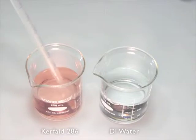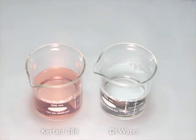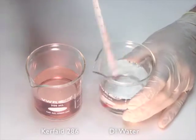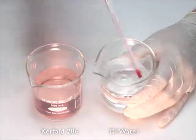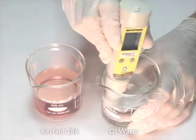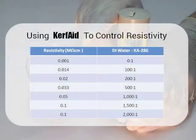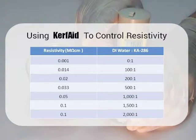To allow greater control of the resistivity, we at Dynatex have performed a simple experiment in which we varied the dilution ratio of Kerfade to deionized water and then tested the resulting solution for resistivity. Here is a table that lists the results. You can use these results to determine what ratio to use, or perform a similar experiment to find your own ideal ratio. It's simply a matter of using a specific amount of Kerfade 286 to set the resistivity of the dicing water.